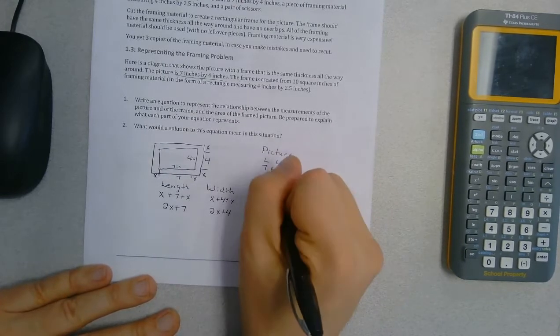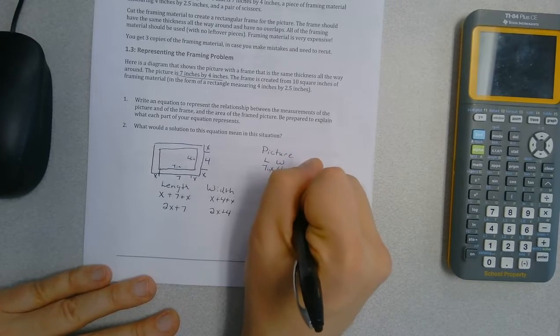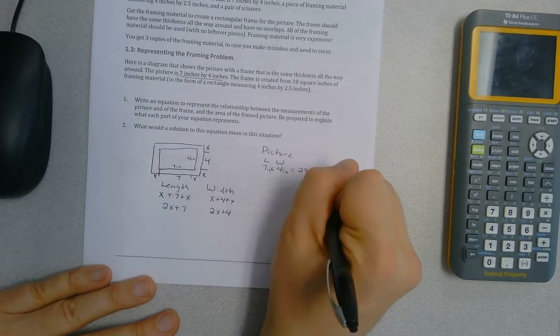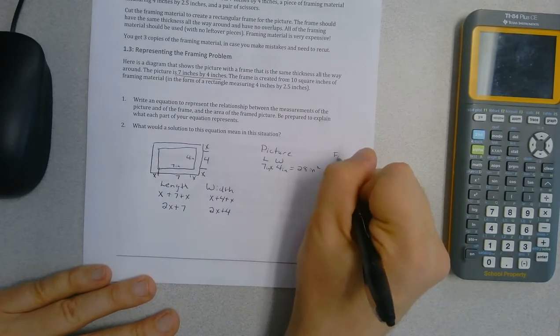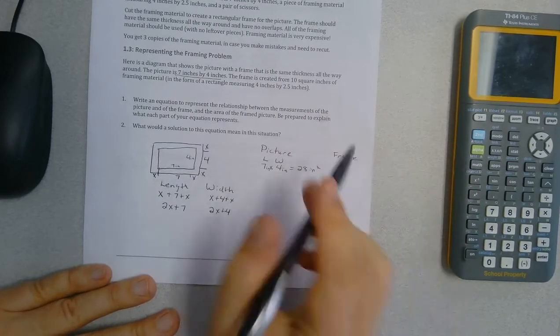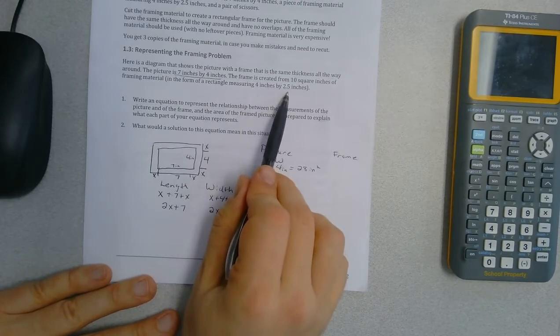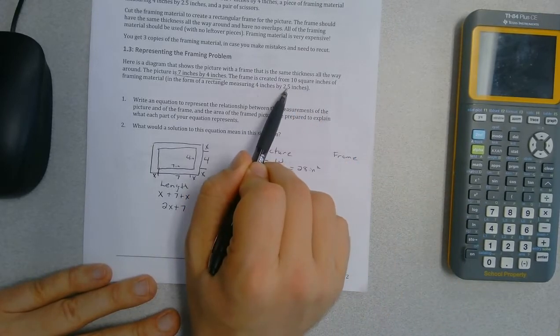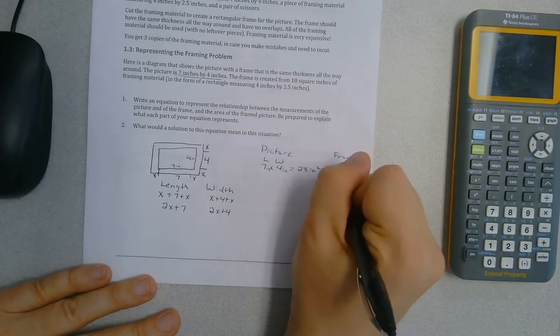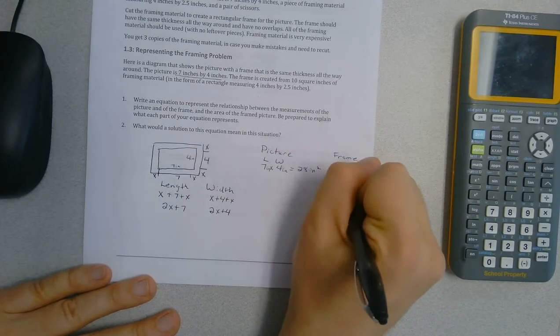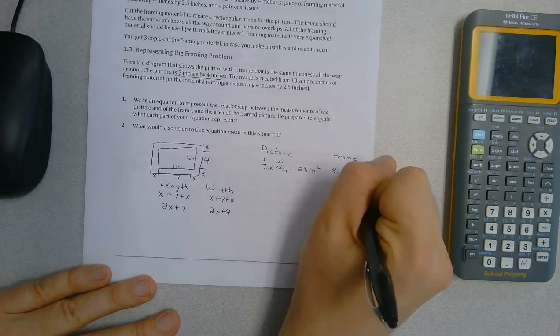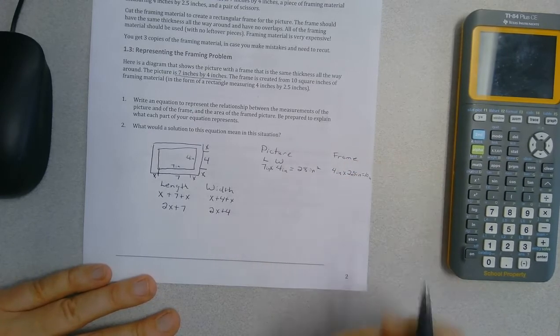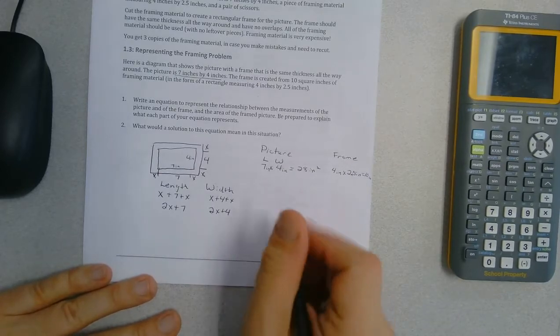And then the area of the frame we were told it's 4 inches times 10 inches which is 10, or 4 inches times 2.5 inches which is 10 square inches. So 4 inches times 2.5 inches gives us 10 square inches. So my total area is equal to 28 square inches plus 10 square inches, which is 38 square inches.